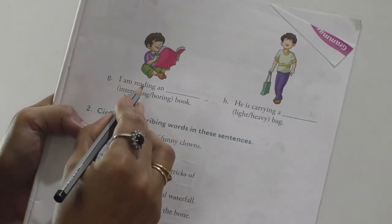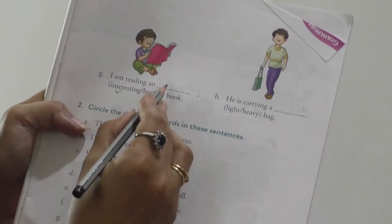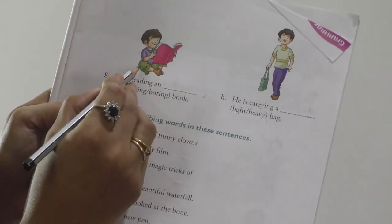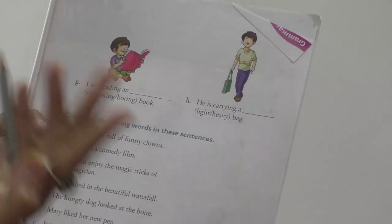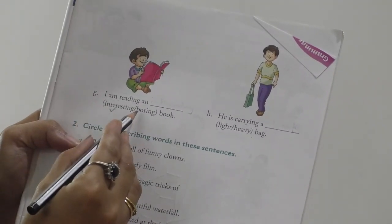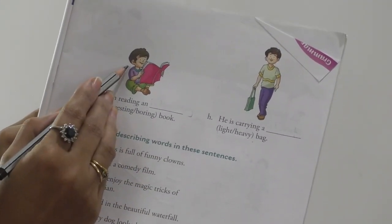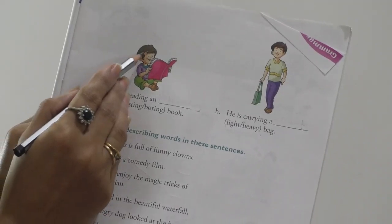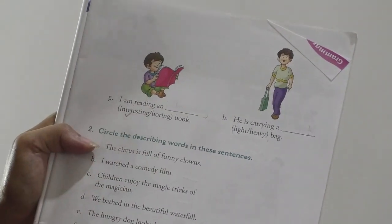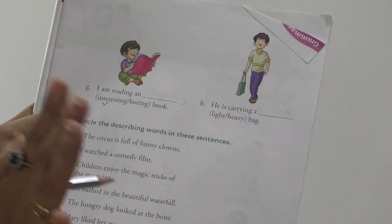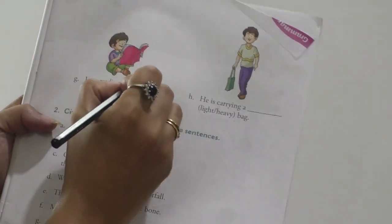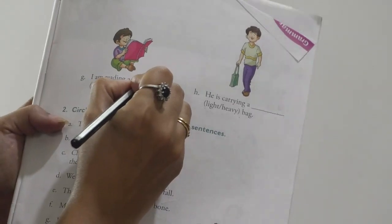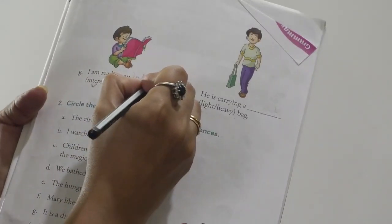I am reading a dash book. The boy is sitting and reading. He is just trying to read but which book? Interesting book or boring book? You have to observe the face. He is smiling. The smile on his face. The book is not boring. It is an interesting book. Right there interesting book.